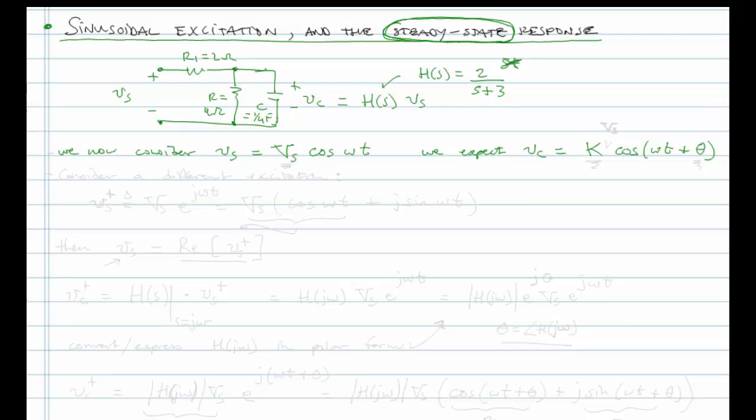You apply a DC excitation, you get a DC response. You apply an exponentially decaying excitation, you get an exponentially decaying response. And so the task really is, we have to confirm that this is true. But if it proves to be true, then the task whenever we solve these problems will be simply finding k and theta.